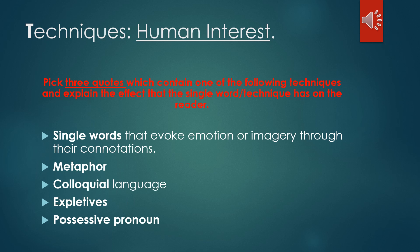Next we have the T in AMITY, which stands for techniques. Looking at the poem Human Interest specifically, pick out three quotations which contain one of the following techniques and explain the effect that the single word or technique has on the reader. This will make up the bulk of your response, so make sure you pick good solid techniques that you understand. You can choose single words that evoke emotion or imagery, but be specific about the type of word — is it a verb, adjective, noun, or adverb? For each of the three, explain the effect and impact on the reader.